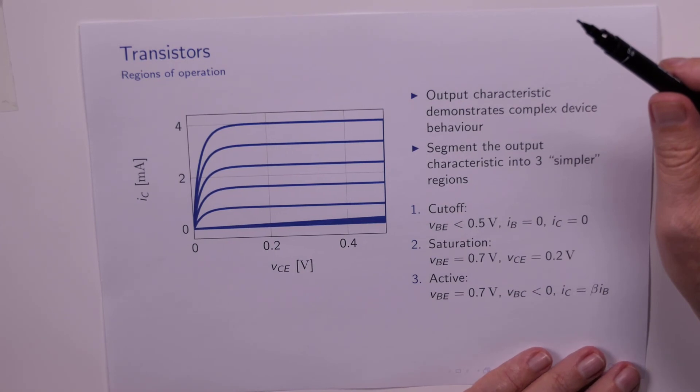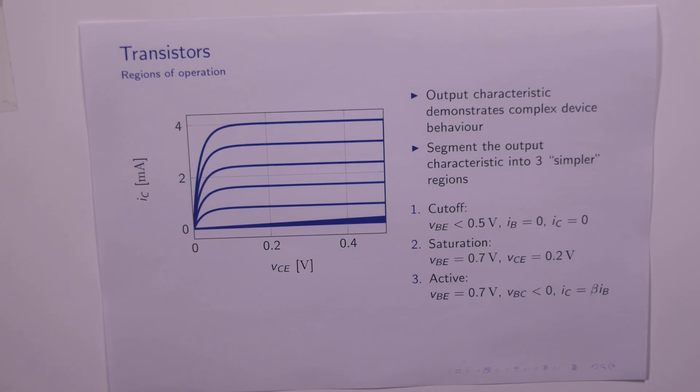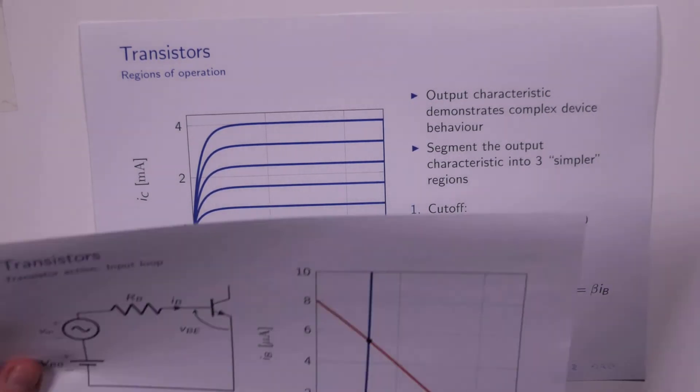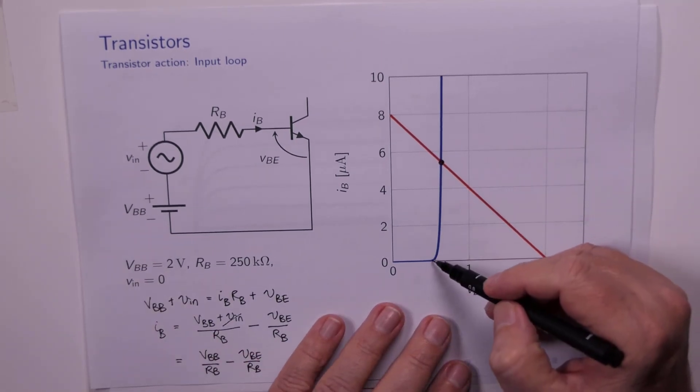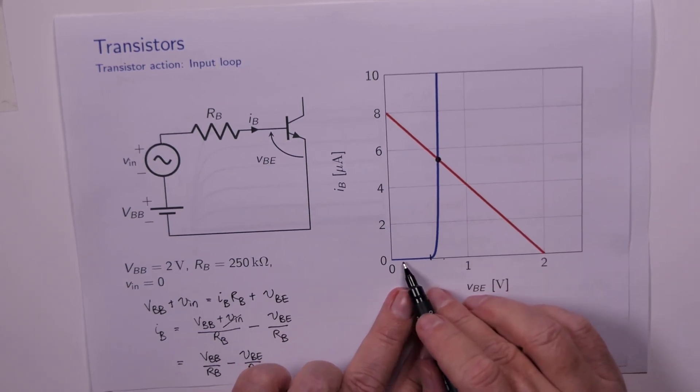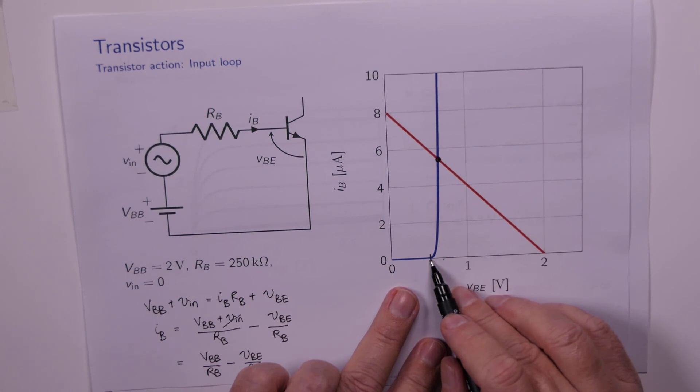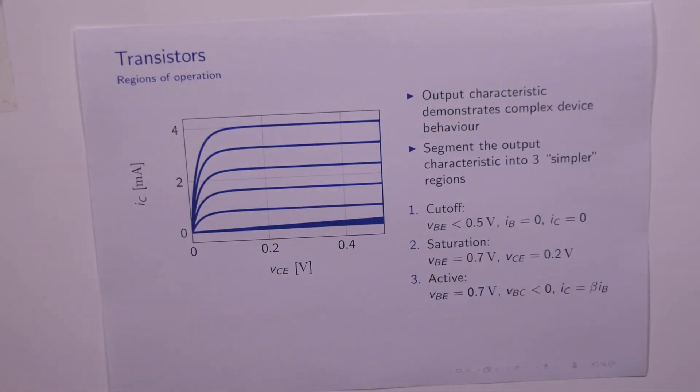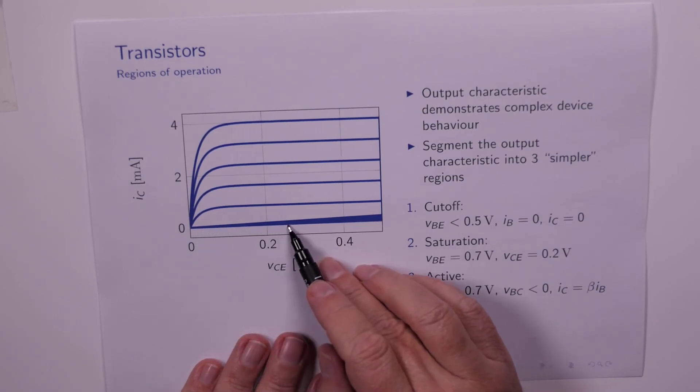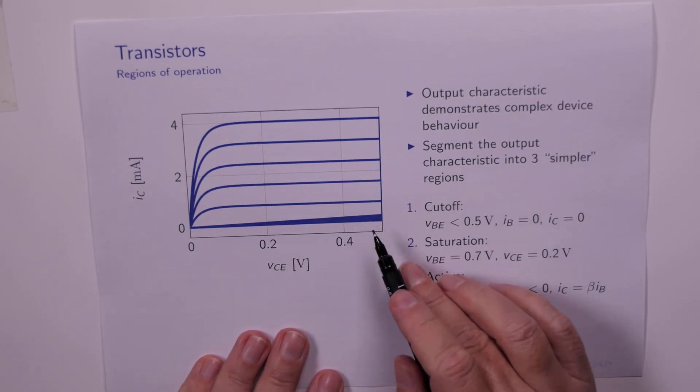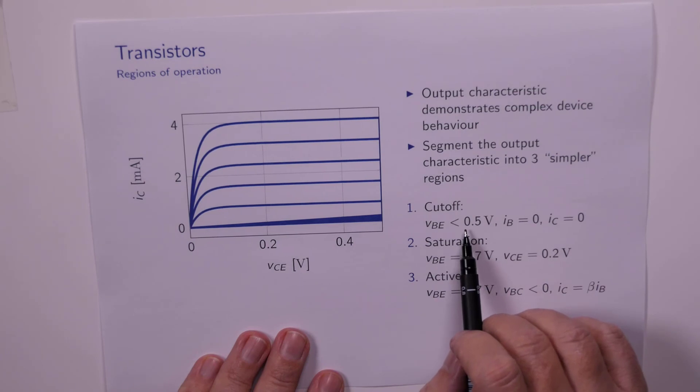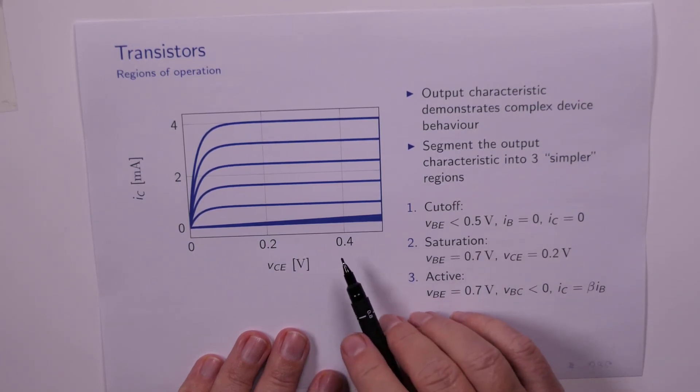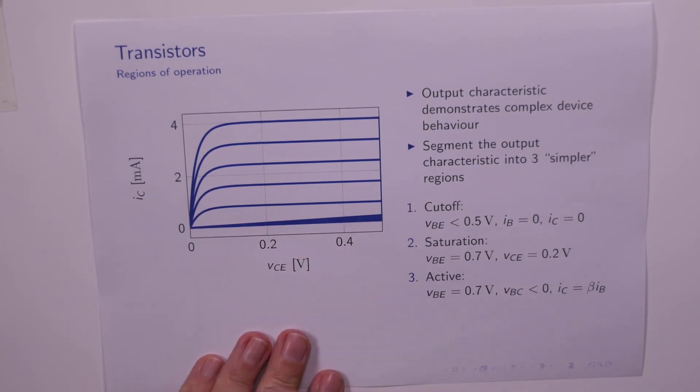Well, if we stare at this thing long enough, it turns out that there are three main regions. The first region is called the cutoff region. The cutoff region occurs when VBE is less than half a volt. Here's VBE around about half a volt there. Clearly when VBE is less than half a volt, there's no base current. And if there's no base current, there can be no collector current. So if IB is 0, then IC is 0, and the cutoff region corresponds to this region down here, right down here around IC equals 0. That's the cutoff region. Comes about because VBE has dropped below half a volt, which means that IB is 0, which means that IC is 0, and we say the device is off or it's in cutoff.